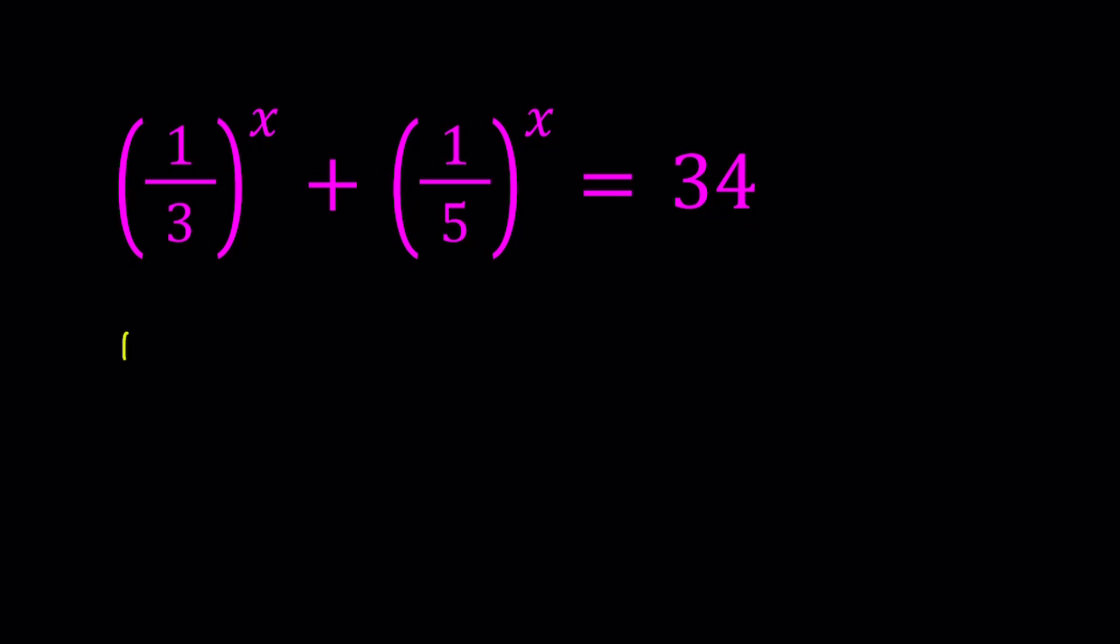First of all, I want you to note that 34 can be written as sum of 2 squares, which is 25 plus 9, and the 25 happens to be 5 squared and 9 happens to be 3 squared. So 34 can be written as 5 squared plus 3 squared.